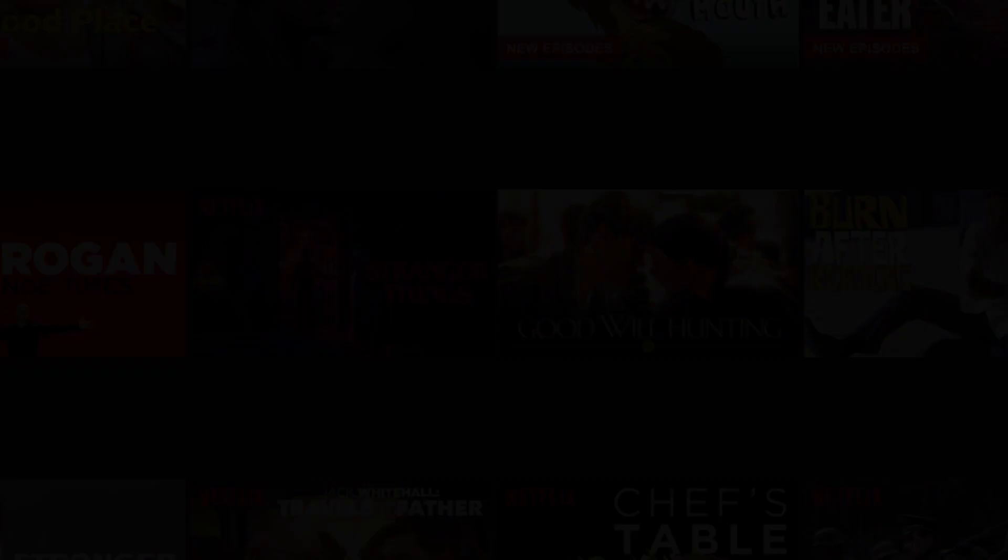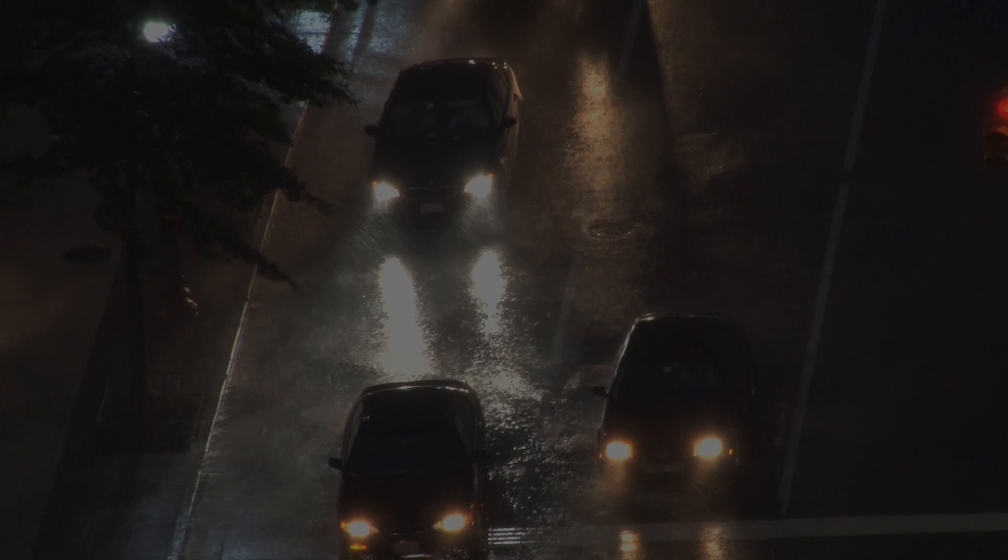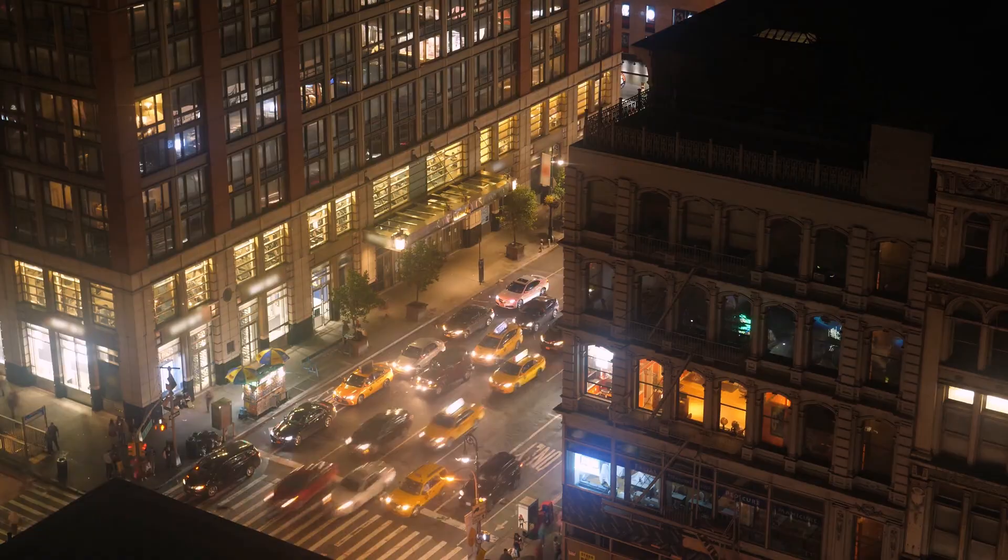When you open Uber, its machine learning platform uses variables like weather, time of day, traffic and historic data to set a price for your trip. When Google Maps warns you about a traffic jam and directs you to an alternate faster route, this is also machine learning working behind the scenes.